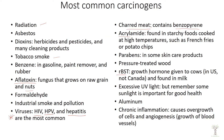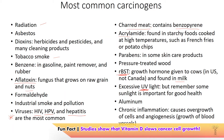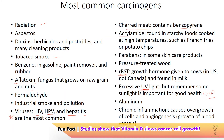Growth hormone — recombinant bovine somatotropin — is not legal in Canada so we don't have to worry about our dairy, but sometimes growth hormone is given to cows in the US, so be careful if you're buying dairy products from the US. Having extra growth hormone would stimulate the growth of cells. Excessive UV light from the sun is also a carcinogen, though we need some sunlight because we produce vitamin D, which helps our immune system.